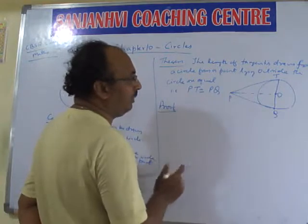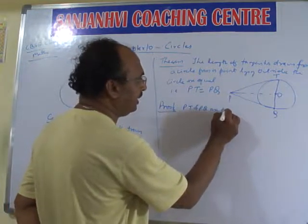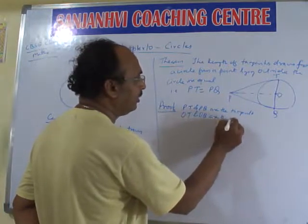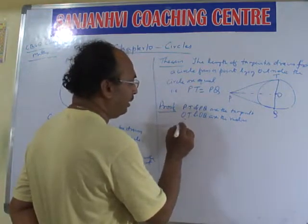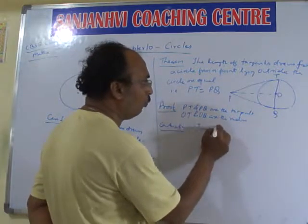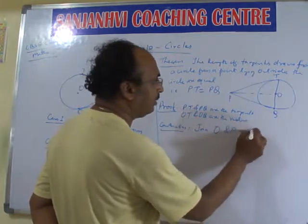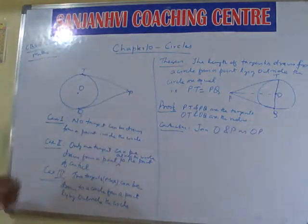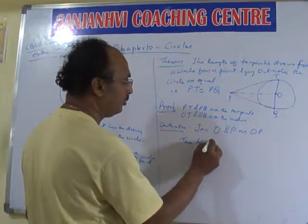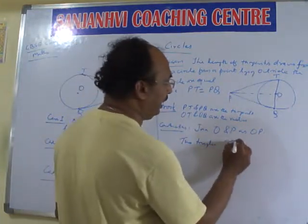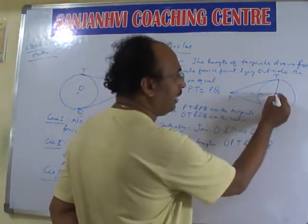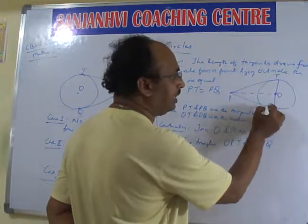To prove: PT and PQ are tangents. OT and OQ are the radii. Construction: join OP. Now two triangles are formed — triangle OPT and triangle OPQ. We have already seen that the radius touching the point of contact makes 90 degrees, so both are right-angle triangles.